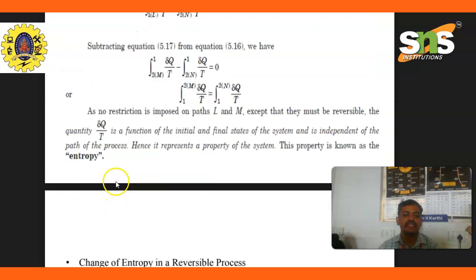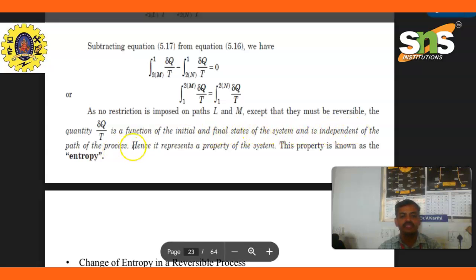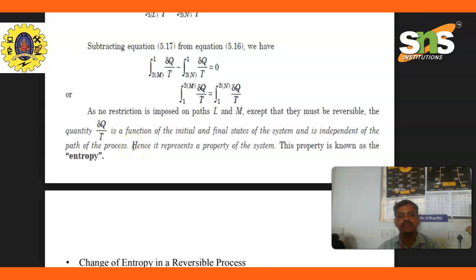Subtracting, we find that the integral of del Q divided by T is a function of initial and final states and is independent of the path or process. Hence, it represents a property of the system. This property is known as entropy.